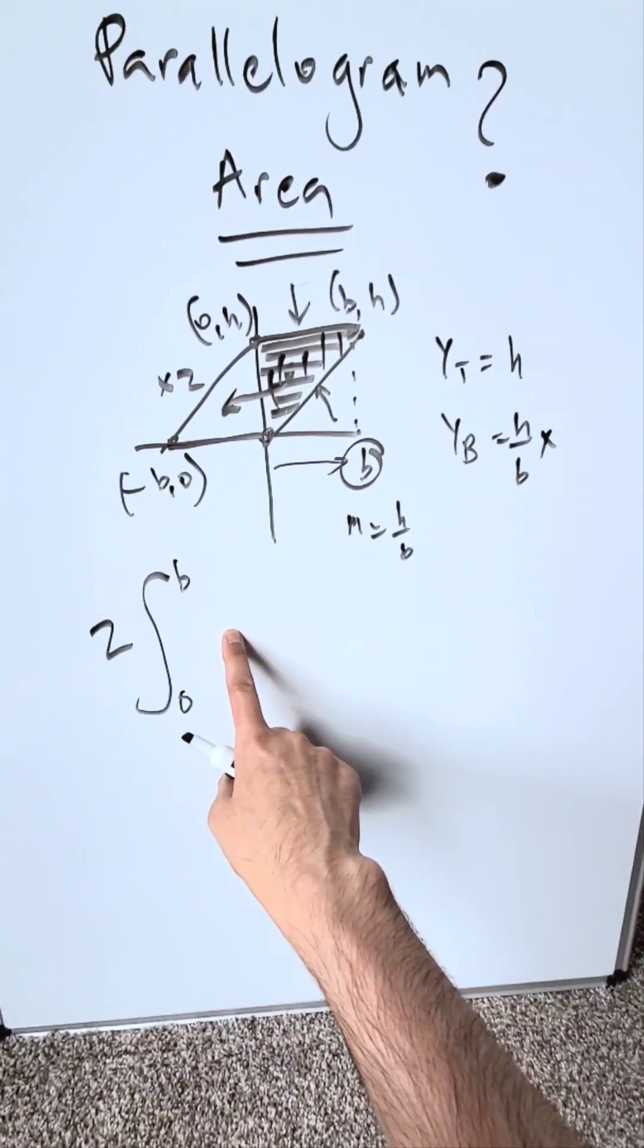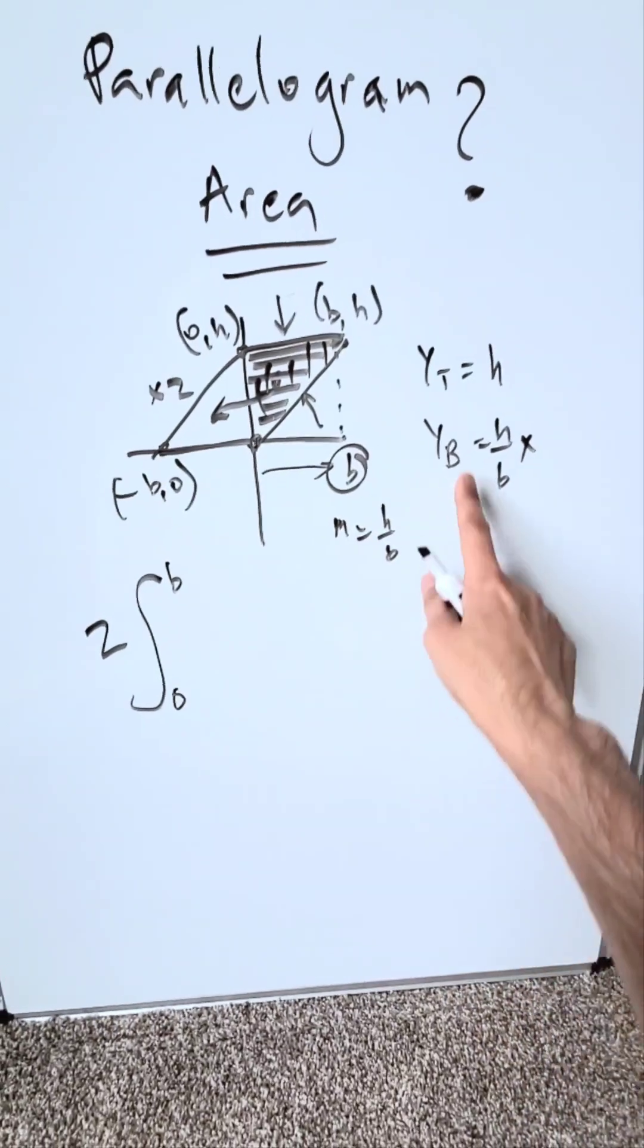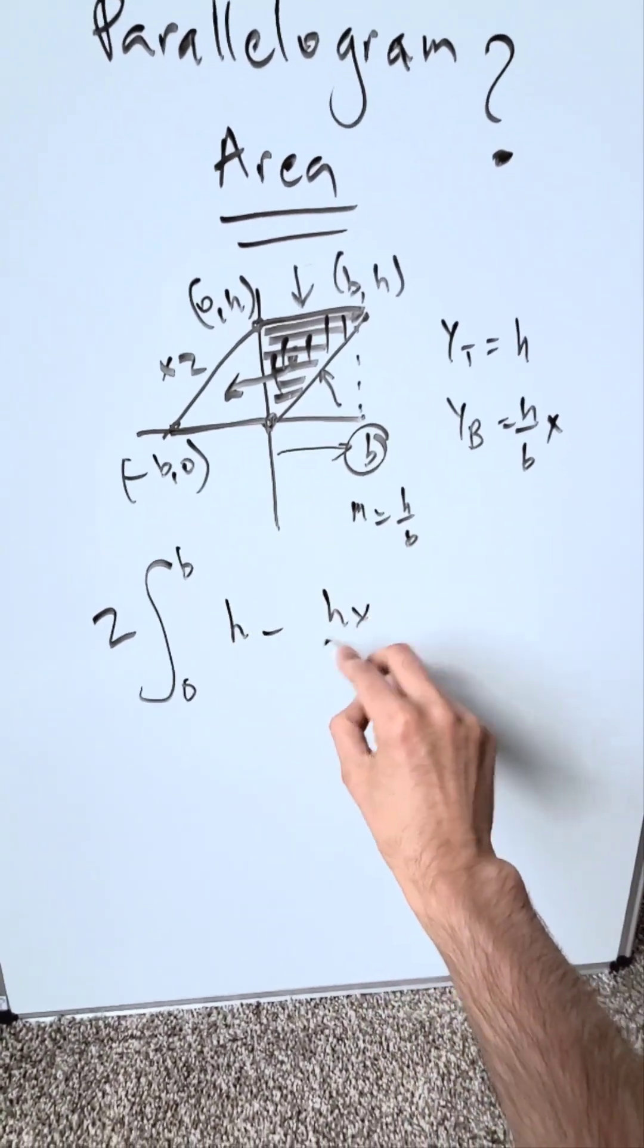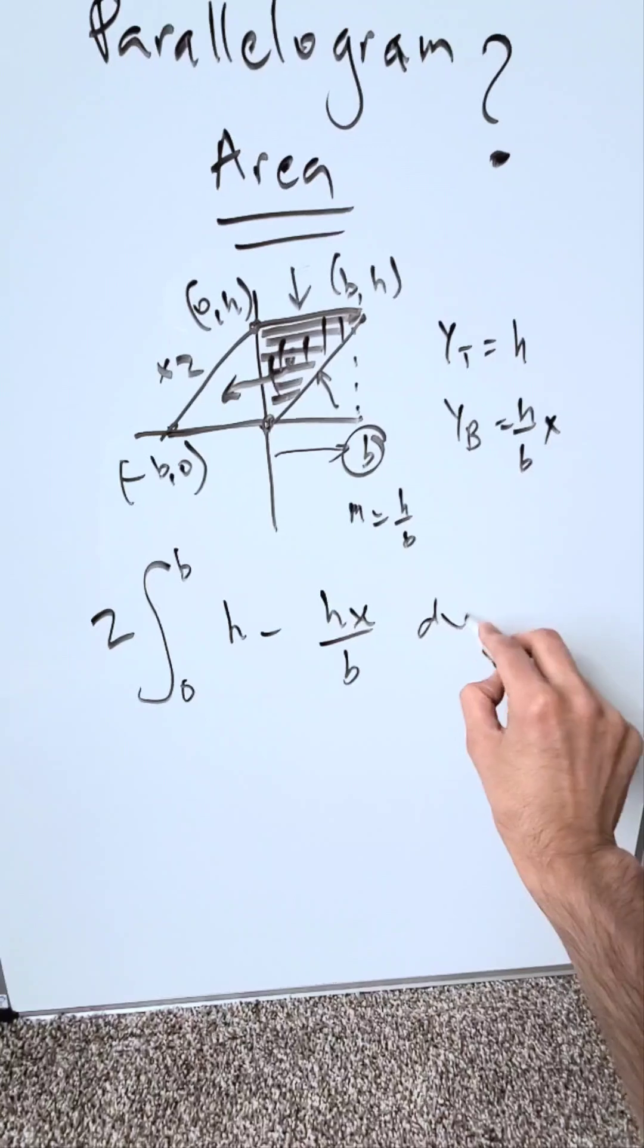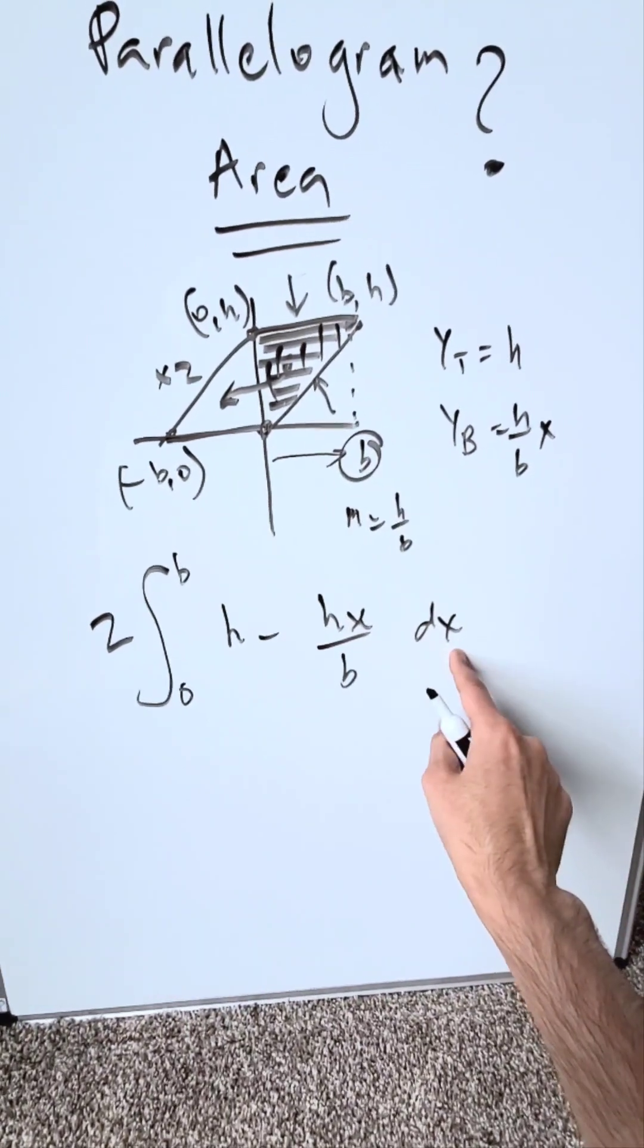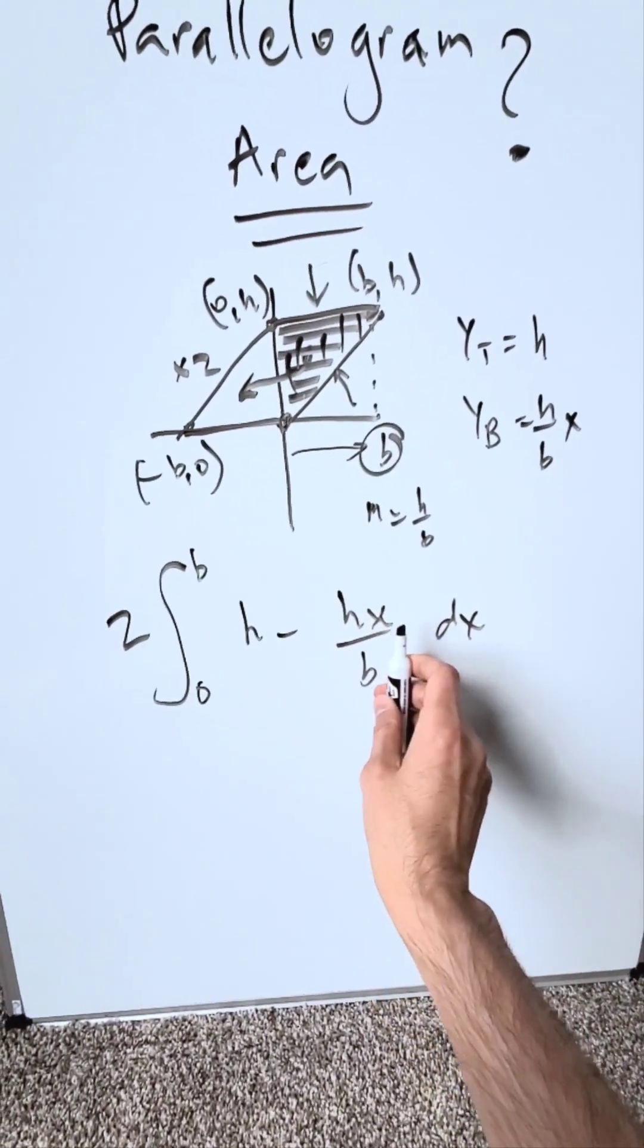My formula here is top function minus lower function or bottom function: h minus (hx/b) dx. Your variable here to integrate is x. So you will integrate that. Everything else is a constant.